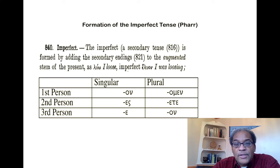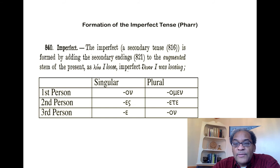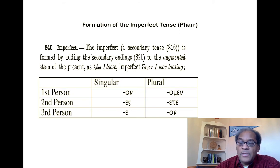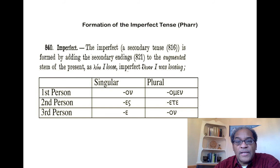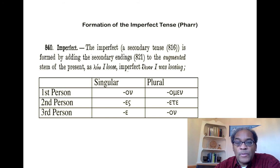Here we have the secondary tense personal endings: -on, -es, -e, -omen, -ete, -on. One should write out this schema 30 or 40 times today, do it again 30 or 40 times tomorrow, and recite it again and again until it's branded in your brain as a schema of six forms. Don't worry about the dual right now — that will take care of itself down the road. Note that the first person singular and the third person plural are identical: -on and -on.